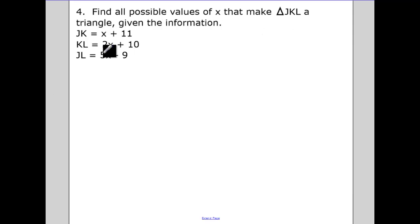Okay, find all possible values of x that make triangle J, K, L a triangle. So what you want to do is set up an inequality. Set up J, K plus K, L has to be bigger than J, L. So J, K plus K, L, that is three x plus twenty-one. That has to be bigger than five x minus nine.